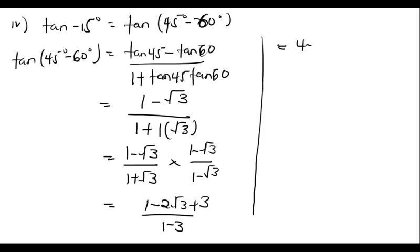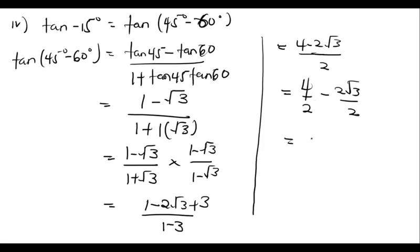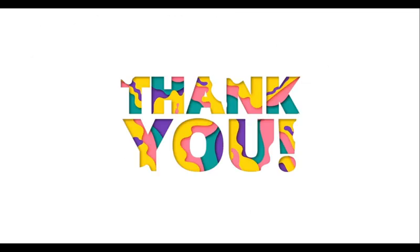Simplifying the numerator: 1 + 3 = 4, so we get (4 − 2√3) / (−2). The denominator is negative 2 because 1 − 3 = −2. Dividing: 4/(−2) − 2√3/(−2) gives −2 + √3, which equals √3 − 2. So the surd form answer for tan(−15°) is √3 − 2. Thank you for watching and I'll see you in the next video.